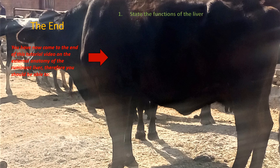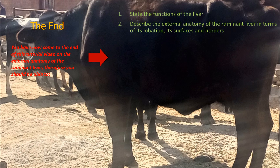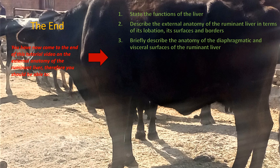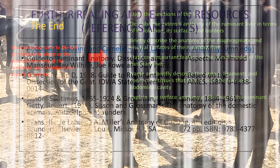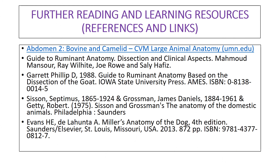You have now come to the end of this tutorial video on the anatomy of the ruminant liver. You should be able to state the functions of the liver, describe the external anatomy in terms of its lobes, surfaces and borders, describe the diaphragmatic and visceral surfaces, state one important feature of the dorsal border, name and describe the various ligaments anchoring the liver, and explain the surface anatomy of the ruminant liver. Thank you for watching.